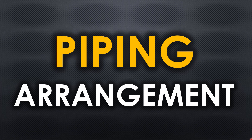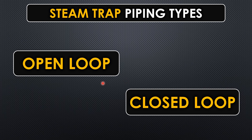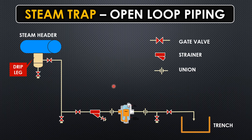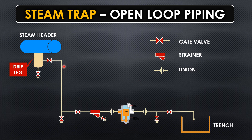Now let's see the piping arrangement of the steam trap. Generally there are two types: open loop and closed loop. In the open loop type, from the steam header you provide a drip leg with a drain. From the drip leg, a line drops down with an isolation valve, then another drain, followed by another isolation valve, a strainer, the steam trap, another drain, another isolation valve, and then it goes to the trench.